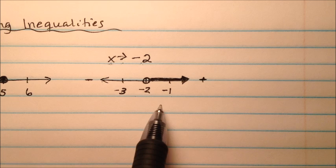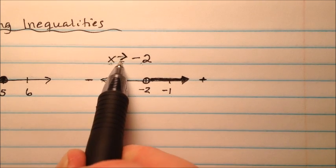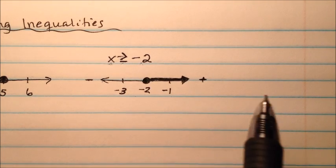Okay, so now how can we make that a closed circle? What if I wanted to include negative 2? Well, instead of just being greater than, I can do greater than or equal to. And now I'll fill that thing in right there.